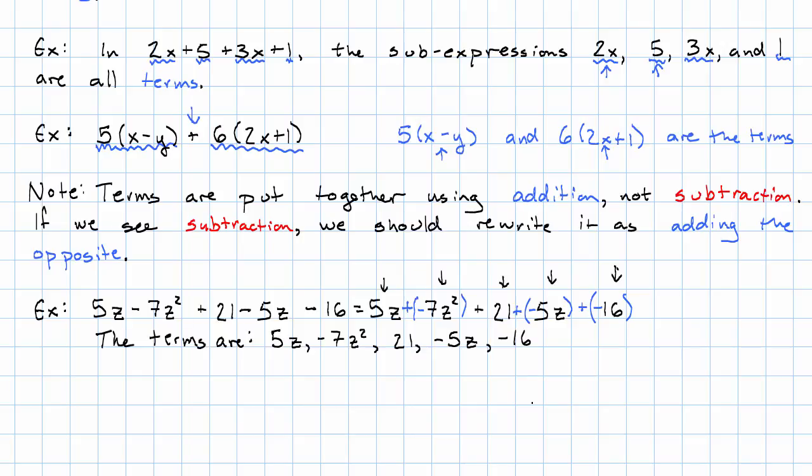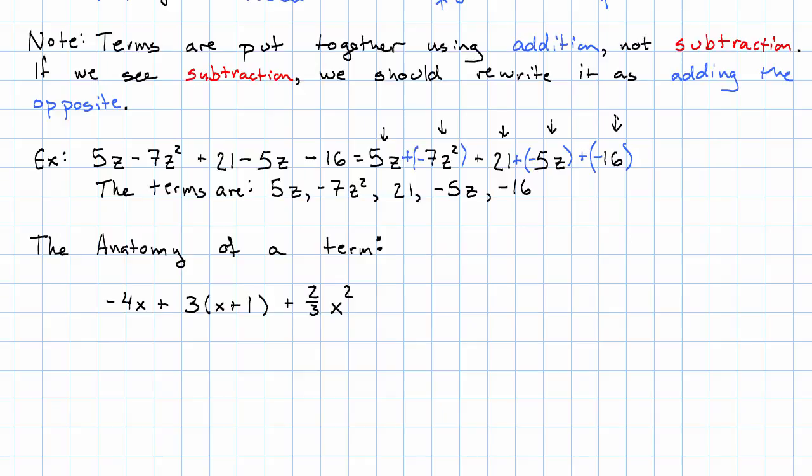So let's take a look at the anatomy of a term. Here's an expression with three terms: negative 4x, 3 times x plus 1, and 2 thirds x squared.